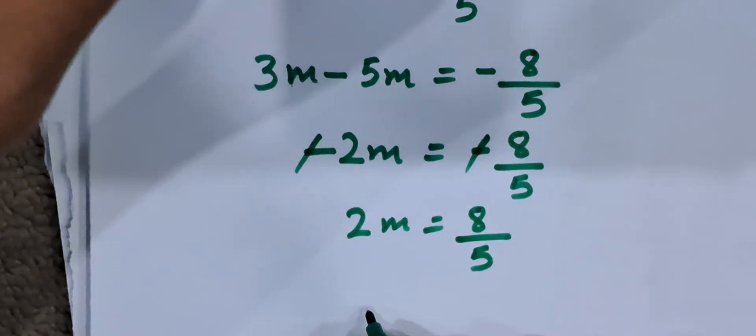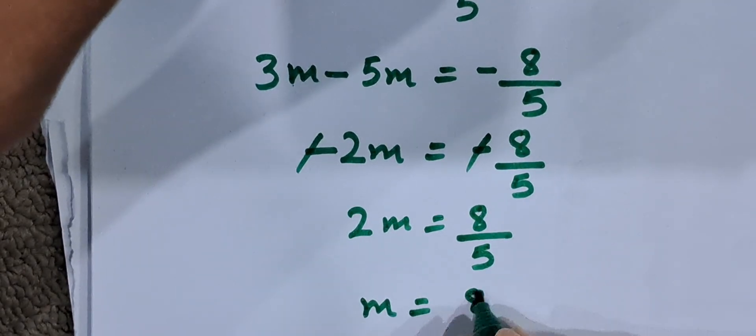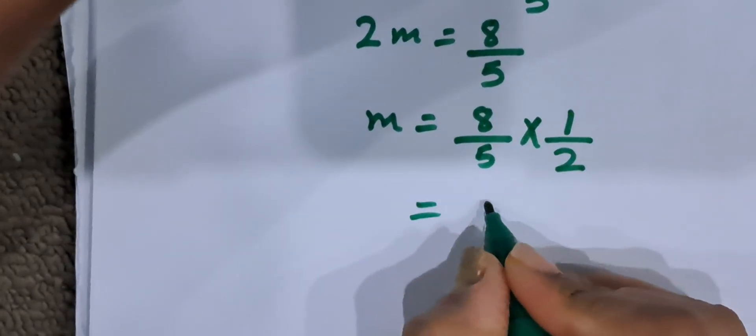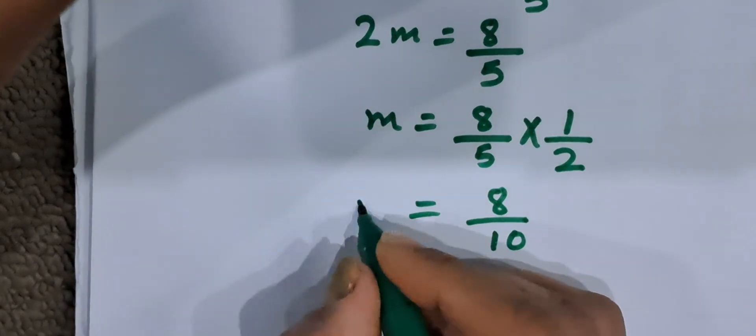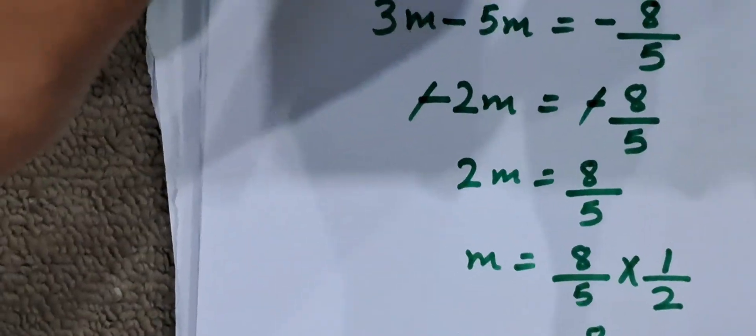So, the value of m will become: m is 8 by 5, and here 2 is multiplied with m, so it goes to the right hand side and becomes divided. It becomes 1 upon 2. So, the value of m is 8 by 10. Now, we will check the results by putting the value of m as 8 by 10 in the question.